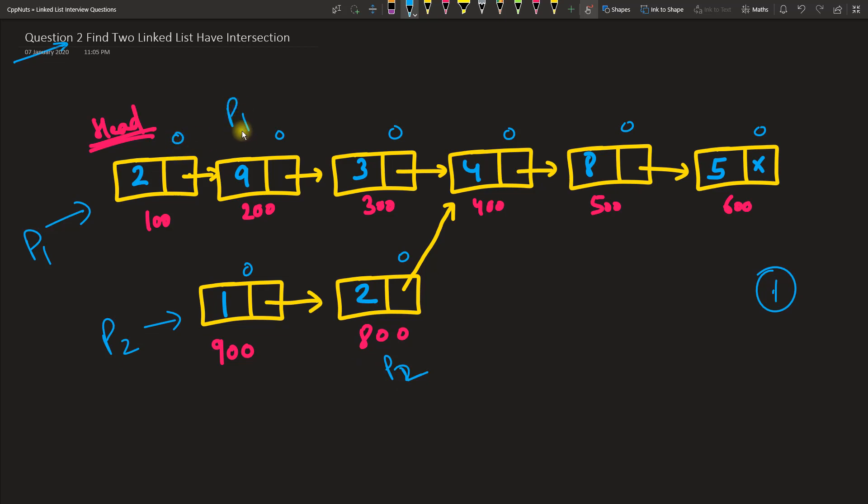Once I reach some place, I will make that flag become one. Initially we were here so the flag for this one was one. As we have reached here, this will become one. So now p1 will again move further, this will become one. Similarly, p2 will go next, which is this one, and p2 will come here. Now this will become one.